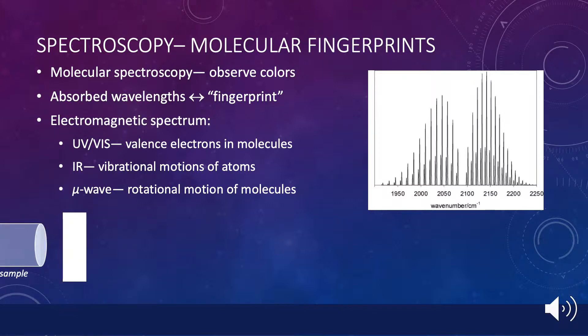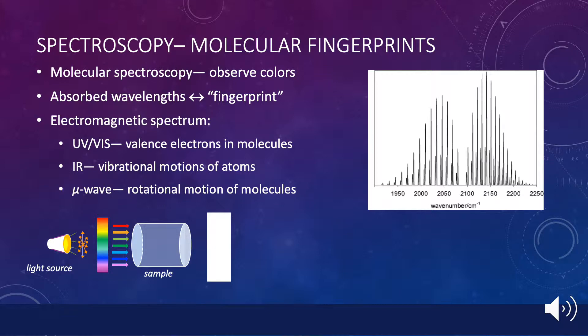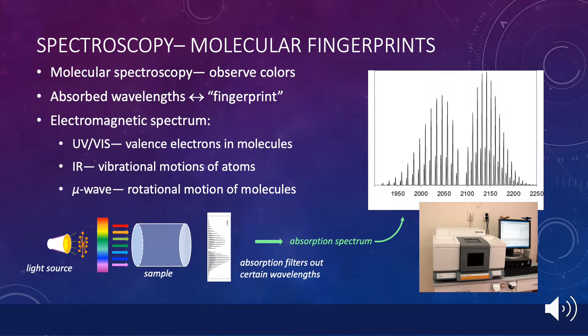A spectrum can be measured by passing tunable light of various wavelengths through a sample and detecting which wavelengths of light are absorbed by the molecules in the sample. This will have reduced transmittance of light at particular wavelengths. As an example, here is what an infrared spectrometer looks like in the lab.